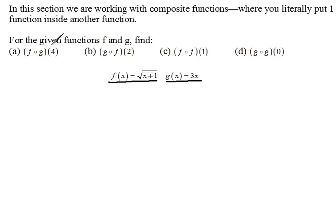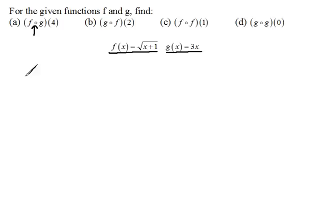First of all they're telling us to do f of g of 4. Now you will know that this is a composite because of that little open circle. This kind of looks like fog, but that open circle is not an o, it actually means composite. So let me show you how I like to write these. I like to do a little bit different notation. I like to write it as the f of g of 4.